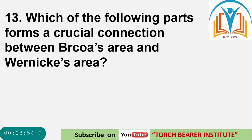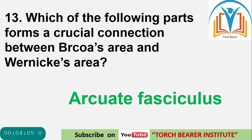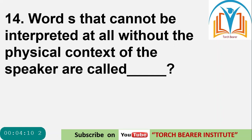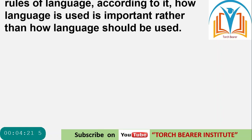Question 13: Which of the following parts forms a crucial connection between Broca's area and Wernicke's area? The answer is the arcuate fasciculus. Question 14: Words that cannot be interpreted at all without the physical context of the speaker are called deixis.